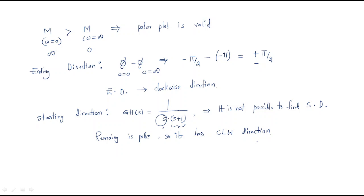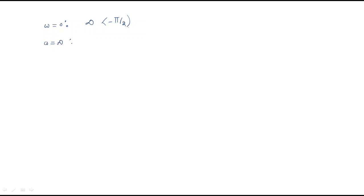Before drawing the polar plot, note the key values: at ω = 0, magnitude is infinite and phase is −π/2. At ω = ∞, magnitude is 0 and phase is −180°. The ending direction is confirmed clockwise, and we assume the starting direction is also clockwise.